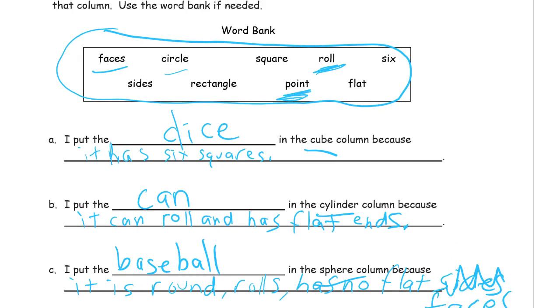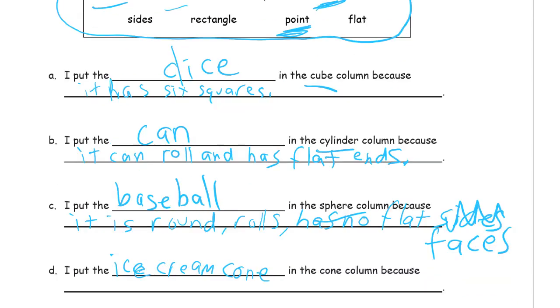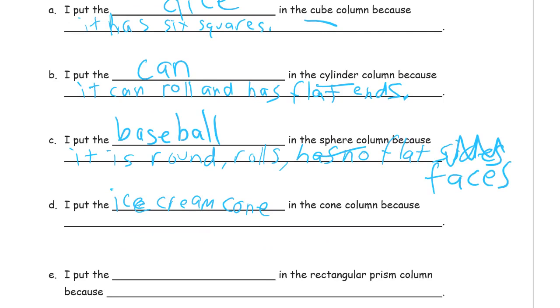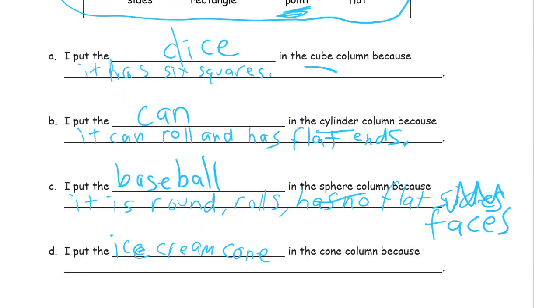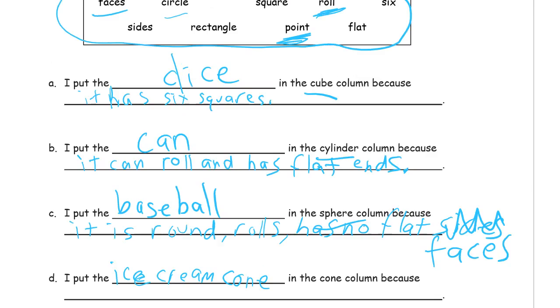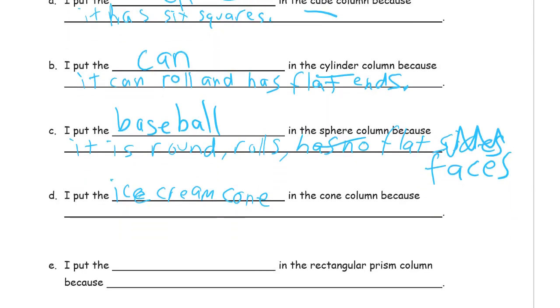Ice cream cone because it has a point. There's a point right here. Because one end is a point. It has a point and a circle, right? Because one end is the point at the pointy end of the cone, and the other end is the circle. It has a point and pointy end and a circle.